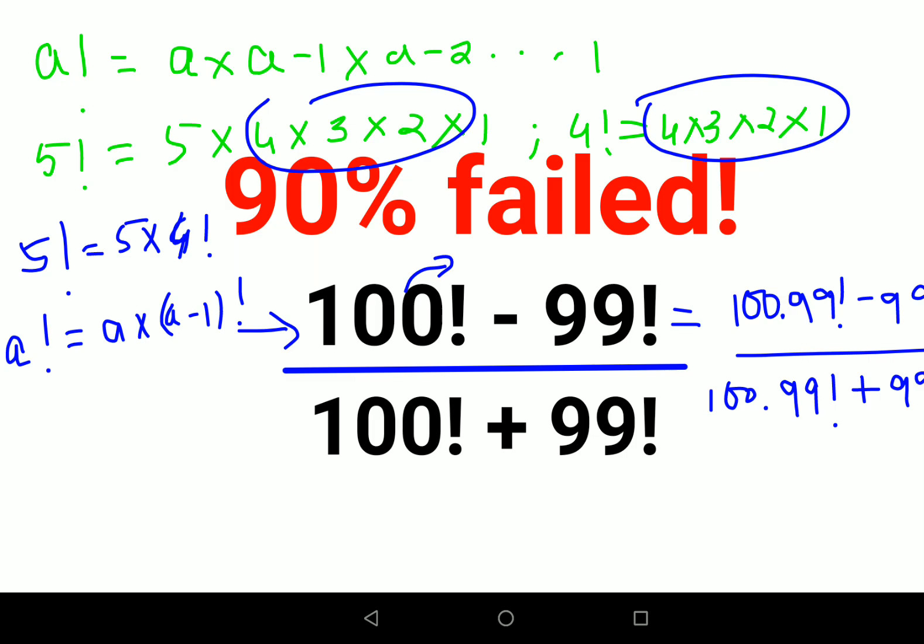So this 99 factorial when divided by each other cancels and gives you 1. We are left with (100 - 1) which is 99 upon (100 + 1) which is 101.